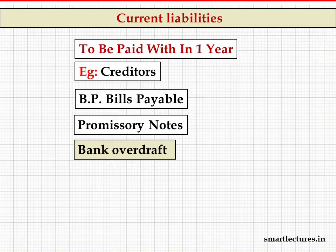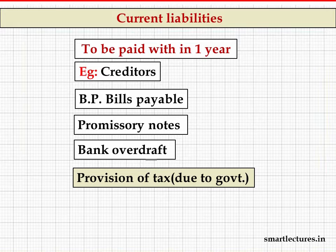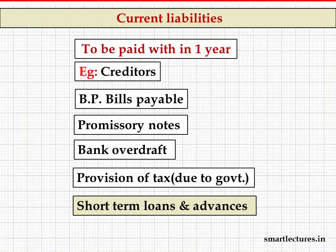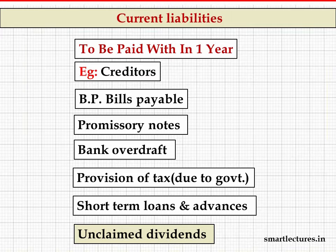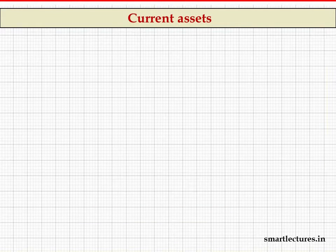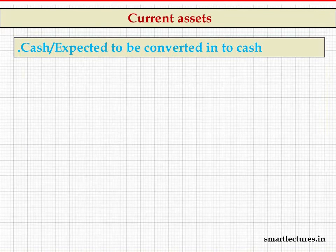Bank overdraft is a liability that generally has to be cleared within one month. Provision for tax means tax due to the government — you can't retain it for years. Short-term loans and advances, and unclaimed dividend — where a company pays dividend but the shareholder is unable to claim it — must also be paid within one year. These are all items treated as current liabilities, meaning they must be paid within one year.